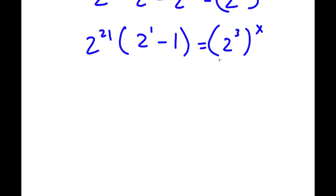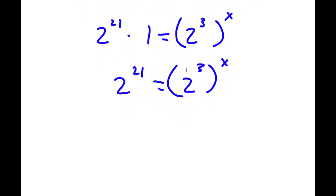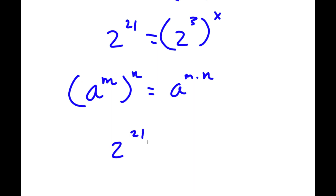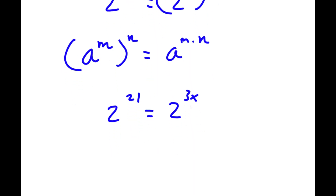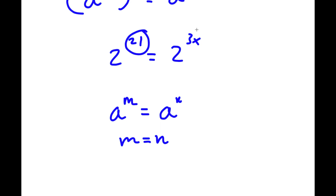Now 2 to the power of 1 is 2, and 2 minus 1 is 1, so I'm left with 2 to the power of 21 times 1, equal to 2 to the power of 3 to the power of x. Anything times 1 is itself, so this simplifies to 2 to the power of 21 equal to 2 to the power of 3 to the power of x. Using the rule that a to the power of m to the power of n equals a to the power of m times n, I can rewrite 2 to the power of 3 to the power of x as 2 to the power of 3x. So I have 2 to the power of 21 equal to 2 to the power of 3x, which means 21 equals 3x.